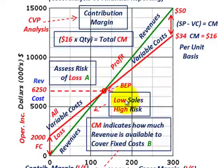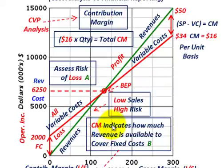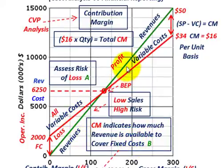If you have low sales, you're going to have a high risk. The contribution margin indicates how much revenue is available to cover our fixed costs, and beyond that, how much profit we're generating — which is the difference between our revenues and our total costs.